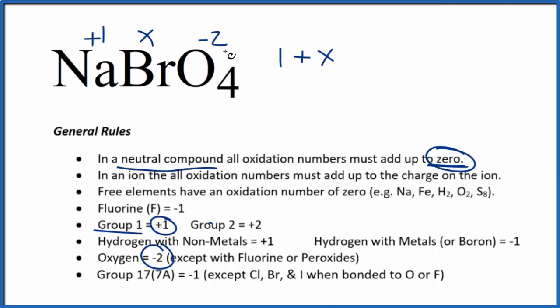So we have four oxygen atoms, and each one has a negative two oxidation number. Four times minus two is minus eight, equals zero. X minus seven equals zero, and then x equals a positive seven.